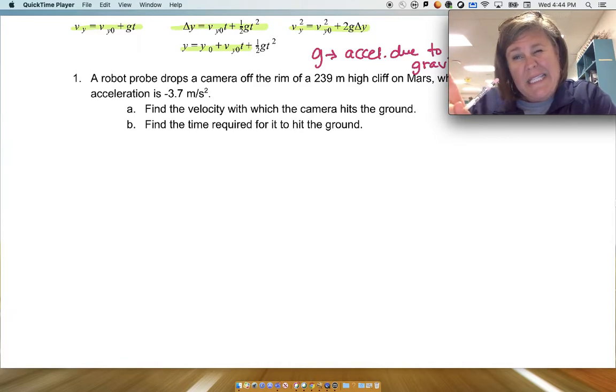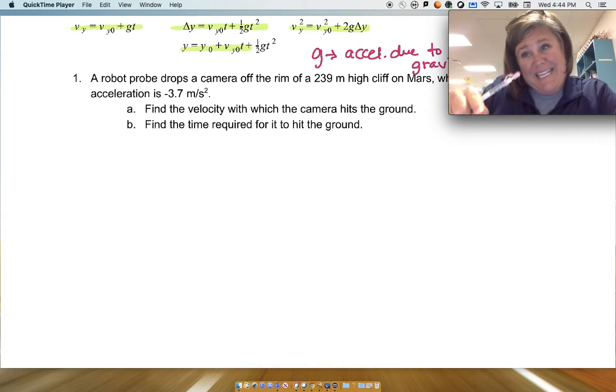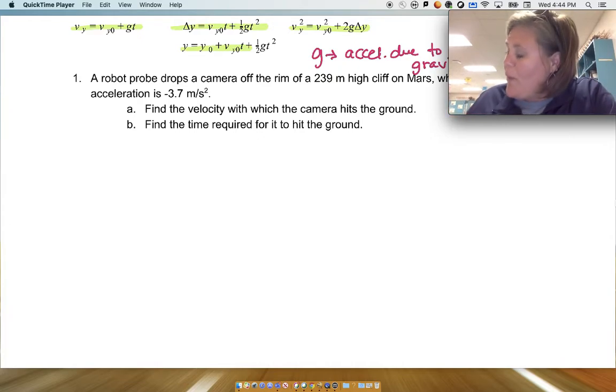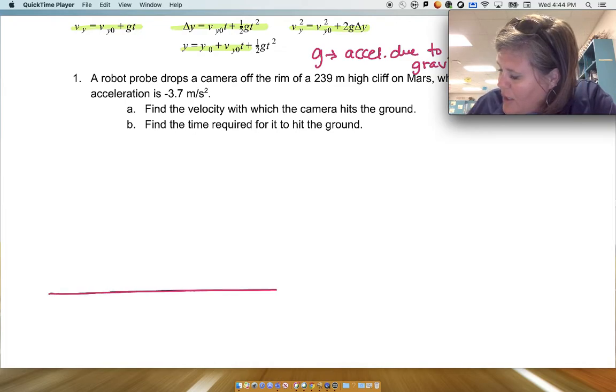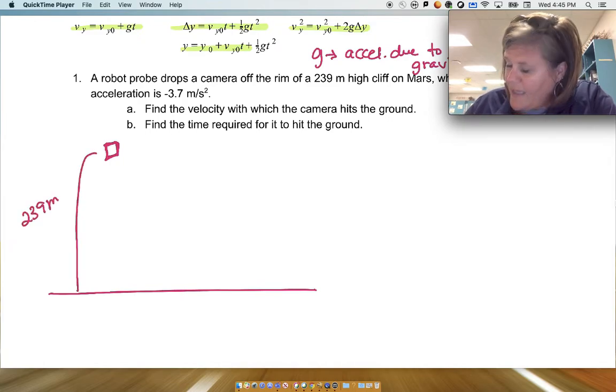So g in this case is not 9.8 meters per second squared downward because we are on Mars. So I'm just going to draw a picture. Here's the ground. Here's the camera. And this cliff is 239 meters tall.